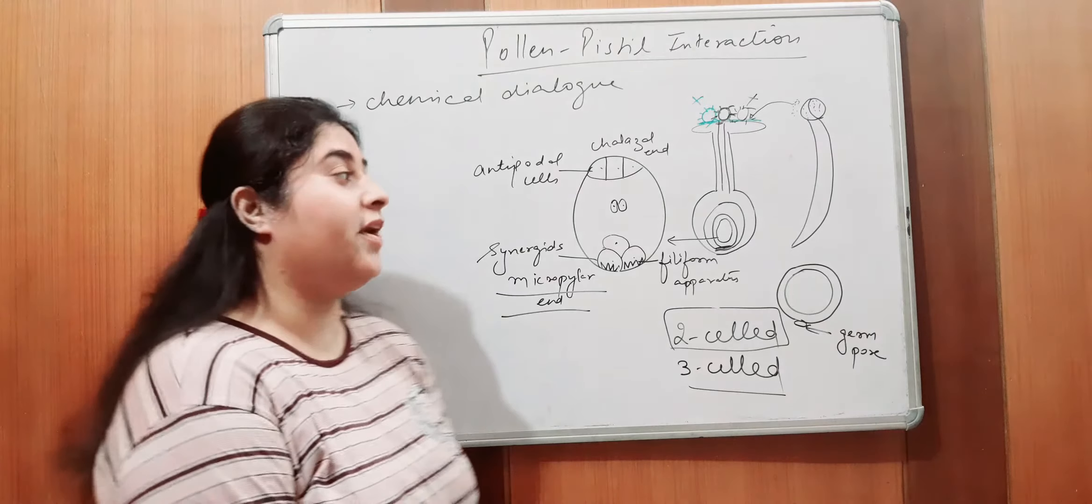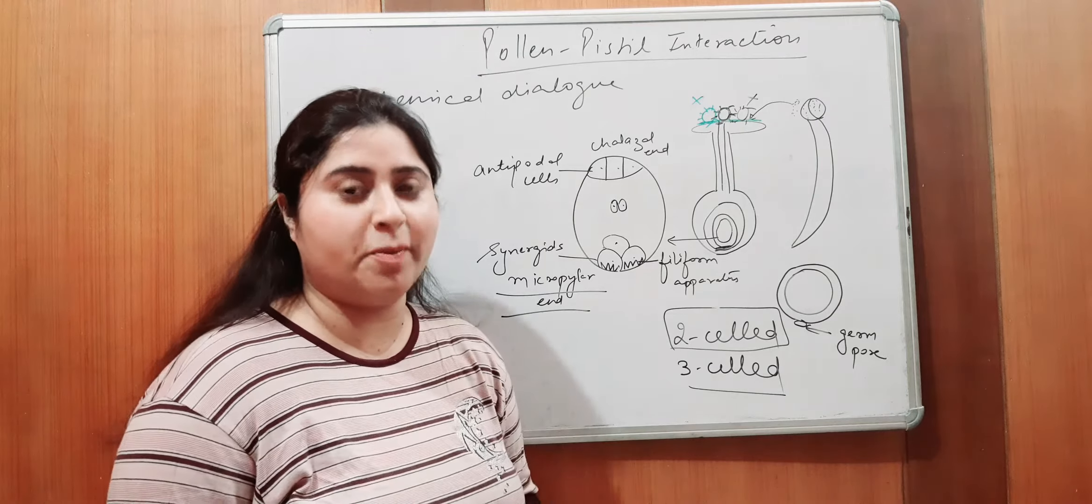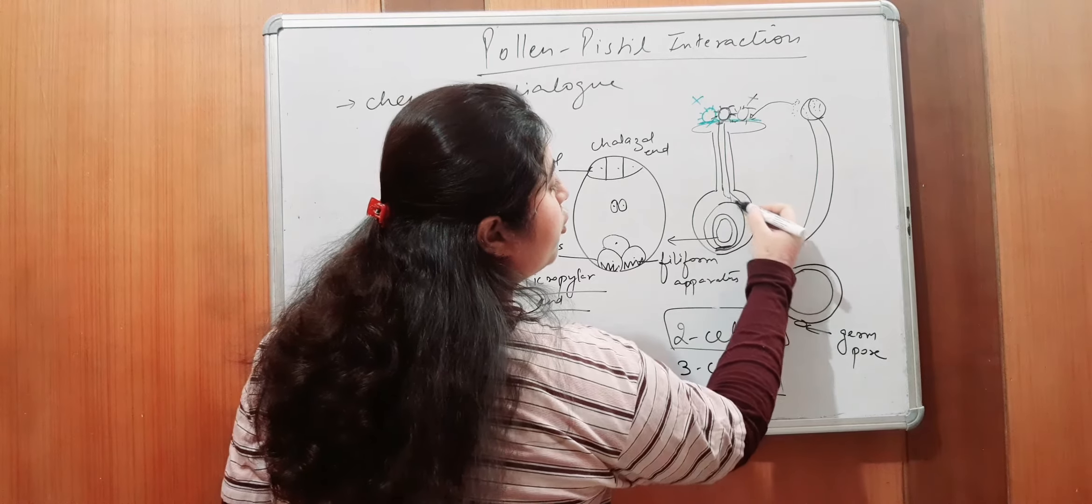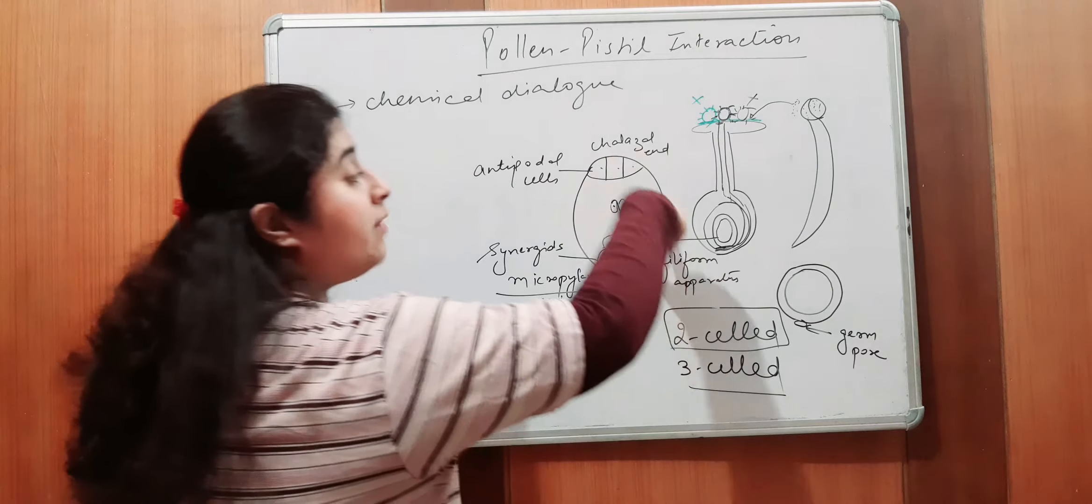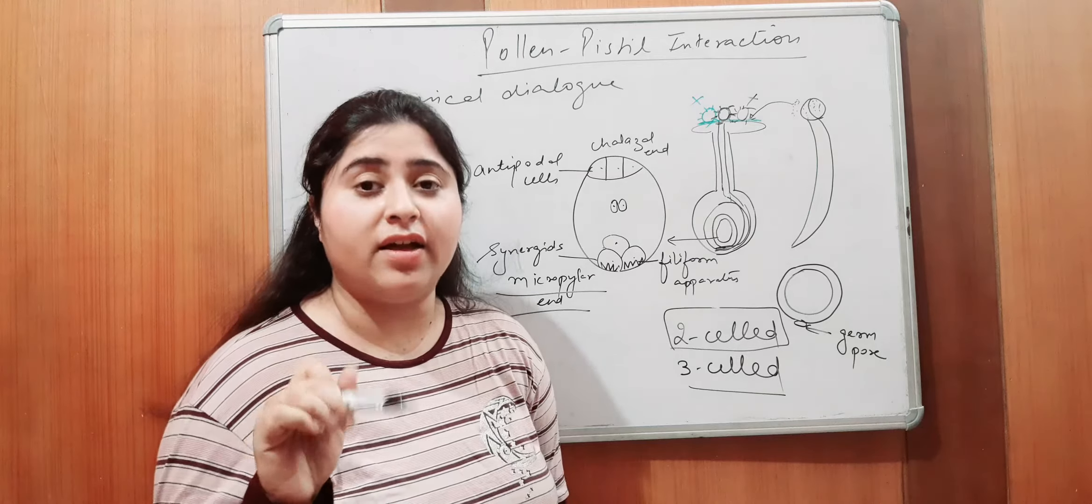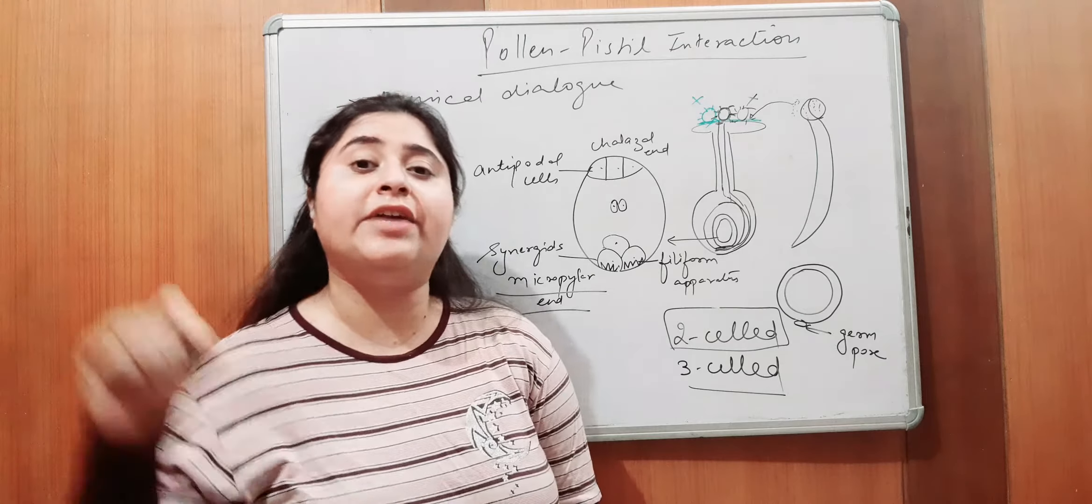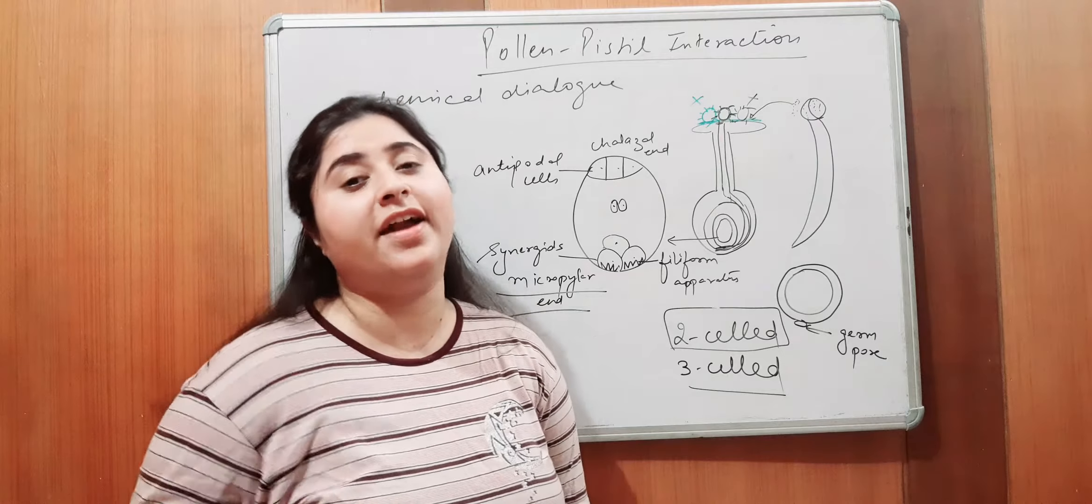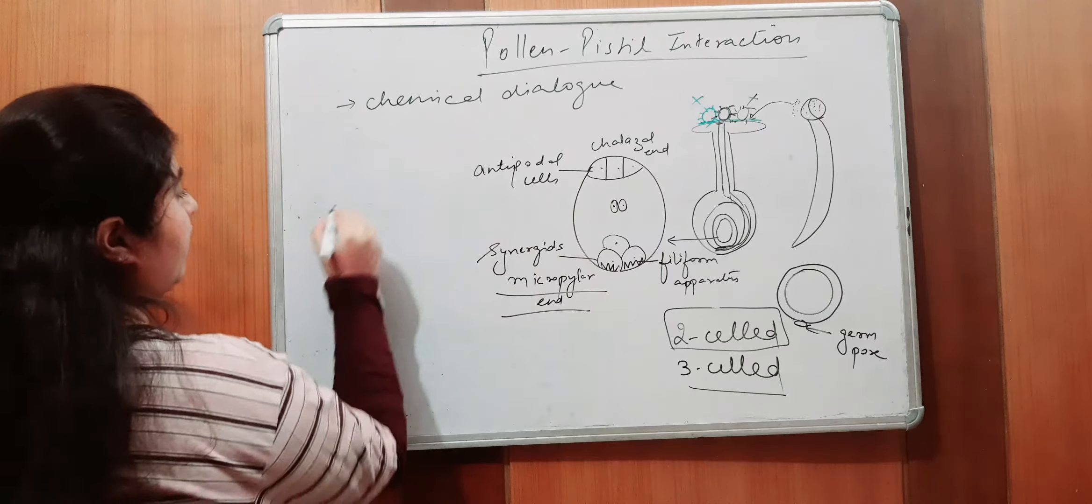Lekan, ab yahaan pe, you have to memorize something. Ab confuse mat ho na. Baita, jab ye pollen tube arise hai, where it is reaching? Toh, pollen tube ne enter karna hai, micropylar end se, female gametophyte ke andar. Female gametophyte koon hai? Embryo sac. Embryo sac kis me hai? Ovule me. Ovule me zaruri nahi hai ki it will enter through the micropylar end. Ovule pe woh kahi se bhi enter kar sakta hai. Yeh, dikho, bita, dhaang se, thoda saaf sutra karne ki kooshish karne hai.